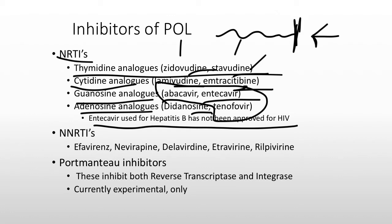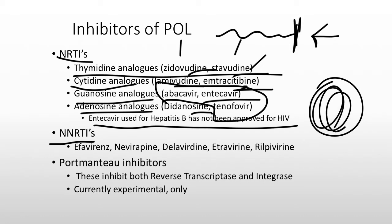NNRTIs — non-nucleoside reverse transcriptase inhibitors — do not look like a nucleotide at all. They bind to a specific part of the reverse transcriptase to keep it from working, making them non-competitive inhibitors. You can remember them by the -virine/-virdine/-virapine endings. There are also experimental portmanteau inhibitors that inhibit both reverse transcriptase and integrase simultaneously.